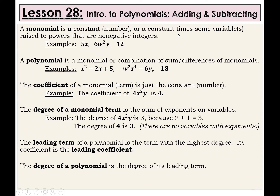Some terms not listed here are binomial and trinomial — we'll see those a little bit later. Bi means two, tri means three. So if you take two monomials and add or subtract them, that can be a binomial; if you take three of them, that can be a trinomial. Then we get to the next term, which is polynomial. Poly means many, so there's many terms. This is a generic word that encompasses all different types, whether there's one or more terms. A polynomial is a monomial or a combination of a sum or difference of monomials. For example, x squared plus 2x plus 5 is a trinomial with three terms. Here's a binomial with two terms: w squared z to the fourth minus 6y. And then 13 is just a monomial. Those are all different types of polynomials.